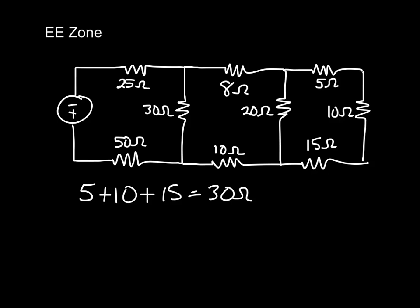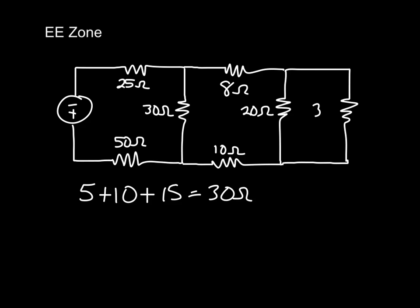And so let's go ahead and change this graph just so we can see it a little better. Still learning the software, it's not real hard but it's hard when you're recording. So now put the 30 ohms here. What we've done is we've replaced the 5, 10, 15 ohm resistor with 30 because they were in series.